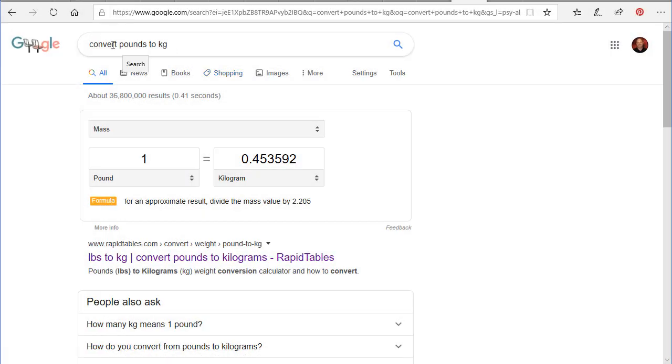I can do a Google search on converting pounds to kilograms. And I'm told here that one pound equals 0.453592 kilograms. Or I can take the mass in terms of pounds and divide by 2.205.